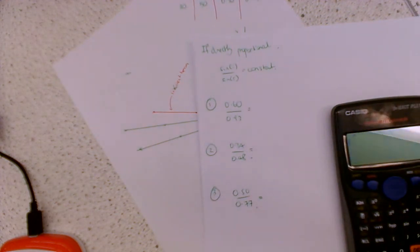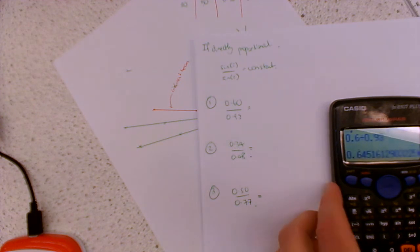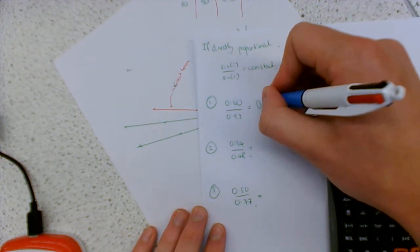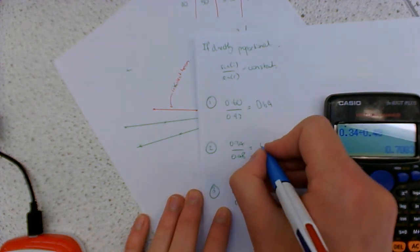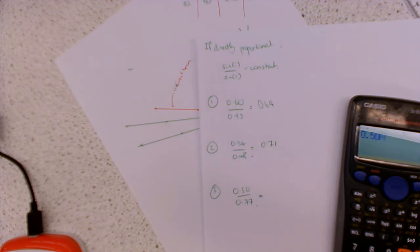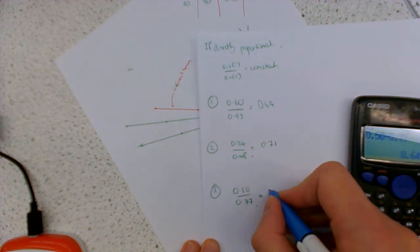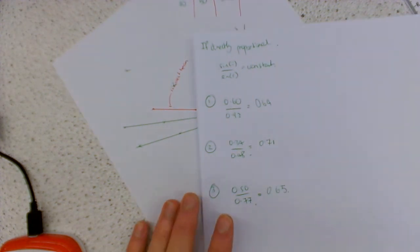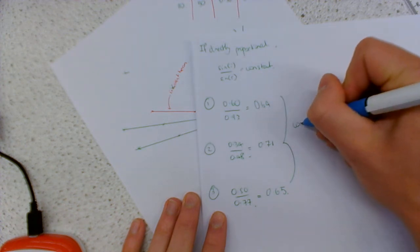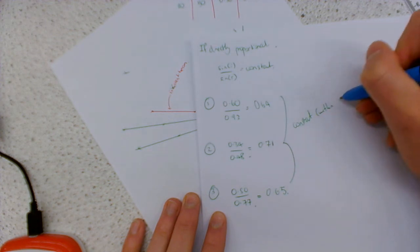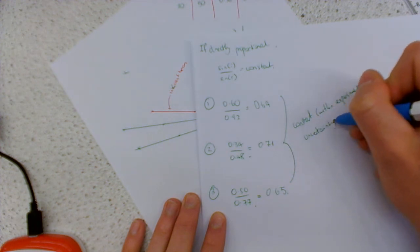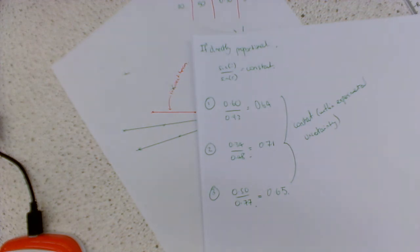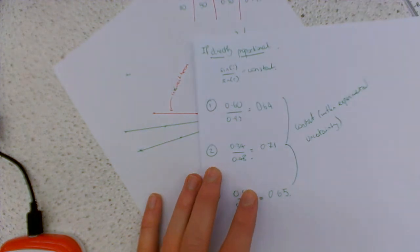So let's actually do that first of all. So 0.6 divided by 0.93. Calculate to output the fraction, but I want the decimal. So that's 0.64. 0.34 divided by 0.48. 0.71. And then 0.5 divided by 0.77. 0.65. So what I'm looking at these is I'm looking at these and they're saying it's constant within experimental uncertainty. So we're never going to get exactly the same value here. But the value we've got, they're all really close together. So what that tells me is it is indeed a directly proportional relationship because this sine i over sine r is the same value all the time.